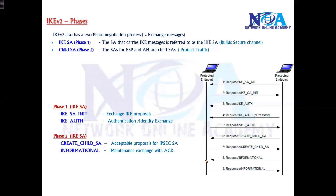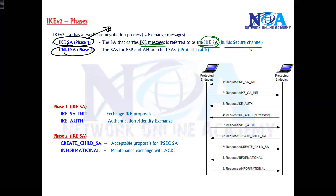Technically, the names here are IKE SA and Child SA — these are the technical equivalents of phase one and phase two. The IKE SA, which is phase one, is about exchanging IKE messages and building a secure channel between the two endpoints. The actual IPSec is applied in phase two, which is the Child SA.